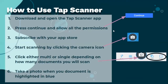How to use Tap Scanner. Download and open the Tap Scanner app. Press continue and allow all the permissions. Subscribe with your App Store. Start scanning by clicking on the camera icon. Click either multi or single, depending on how many documents you will scan. Take a photo when the document is highlighted in blue.